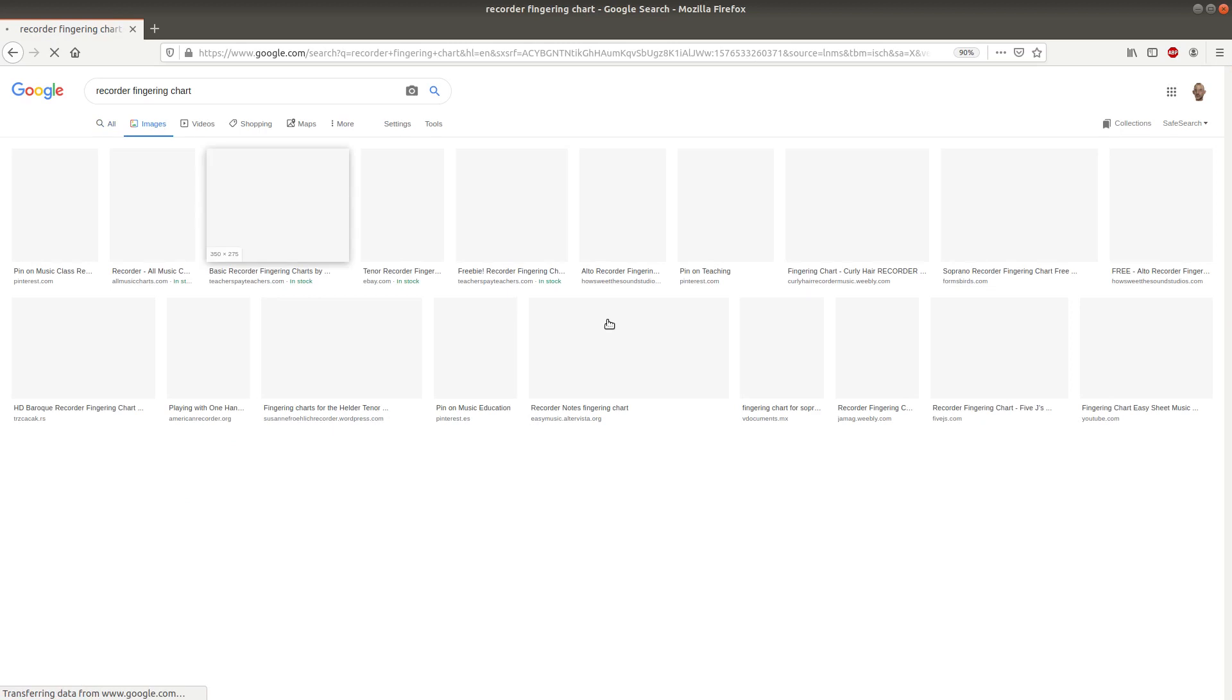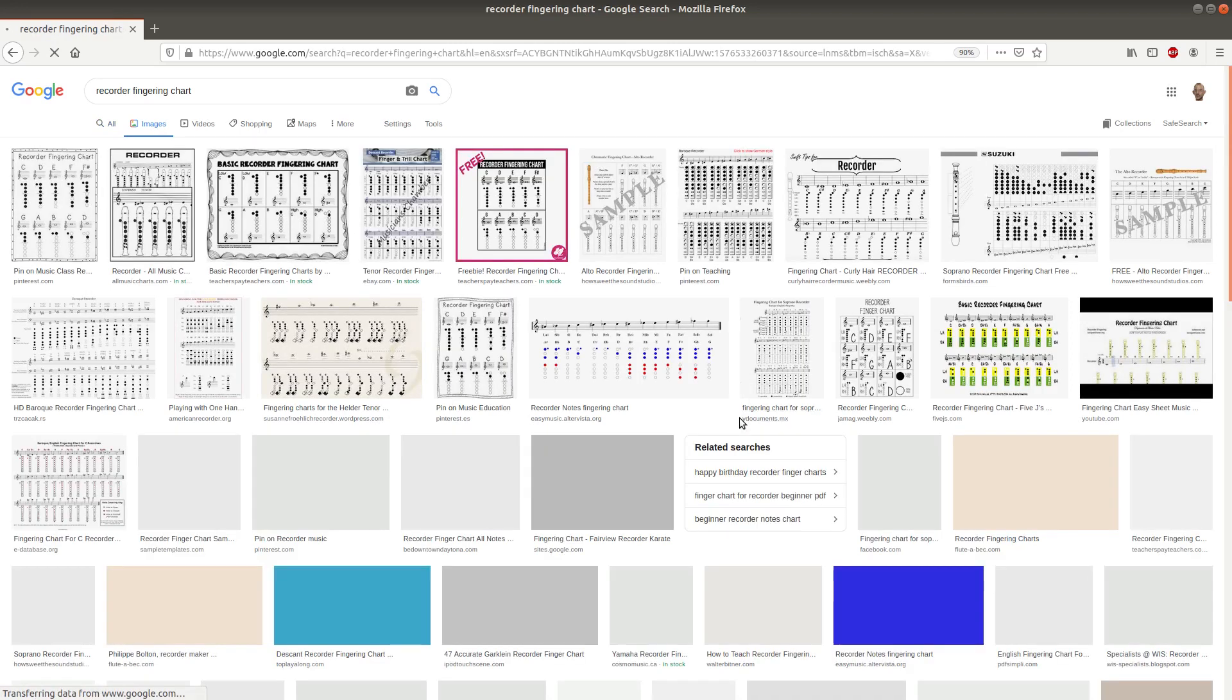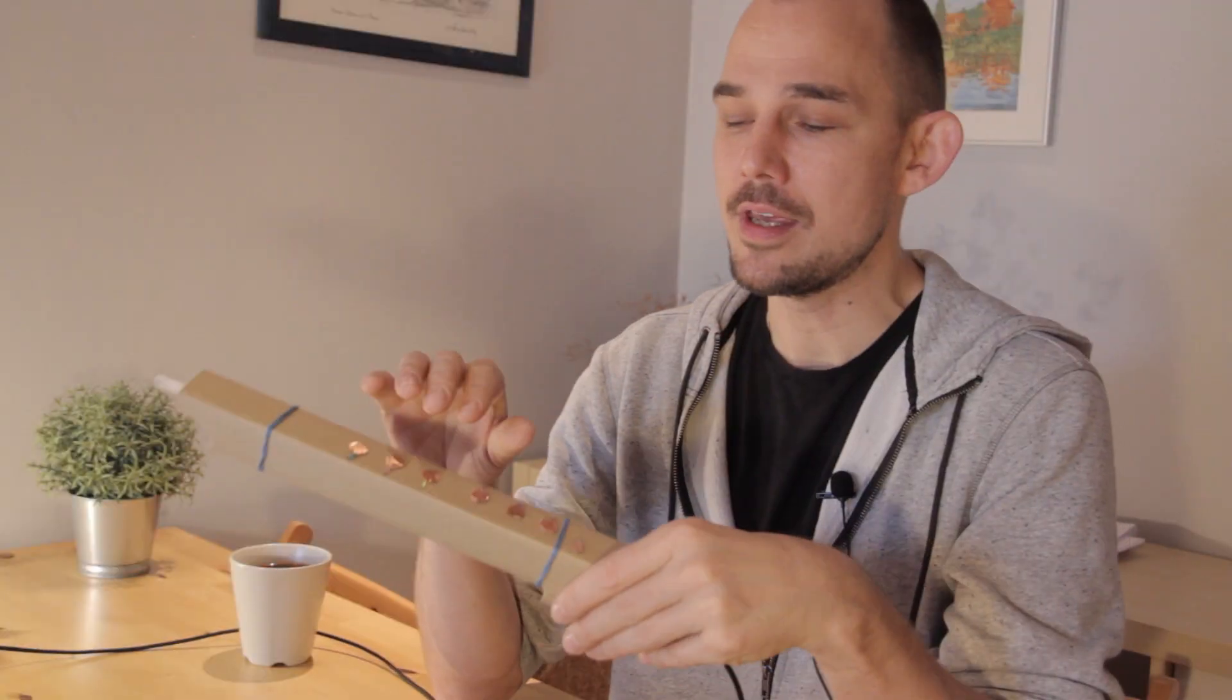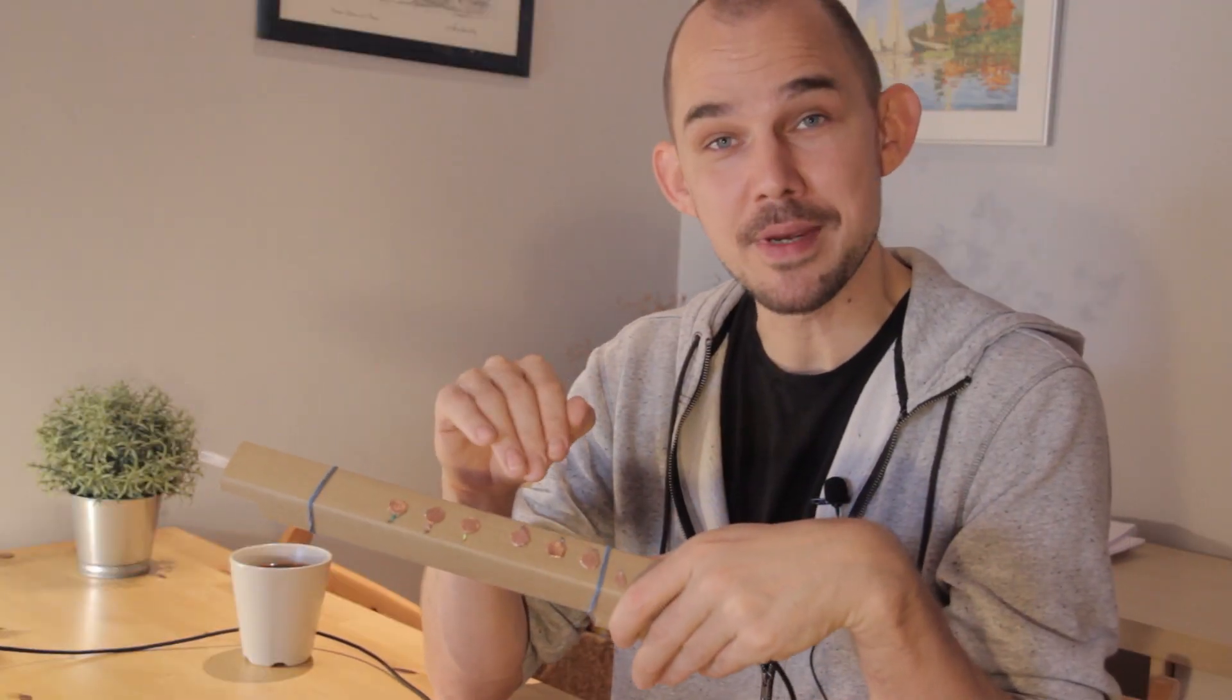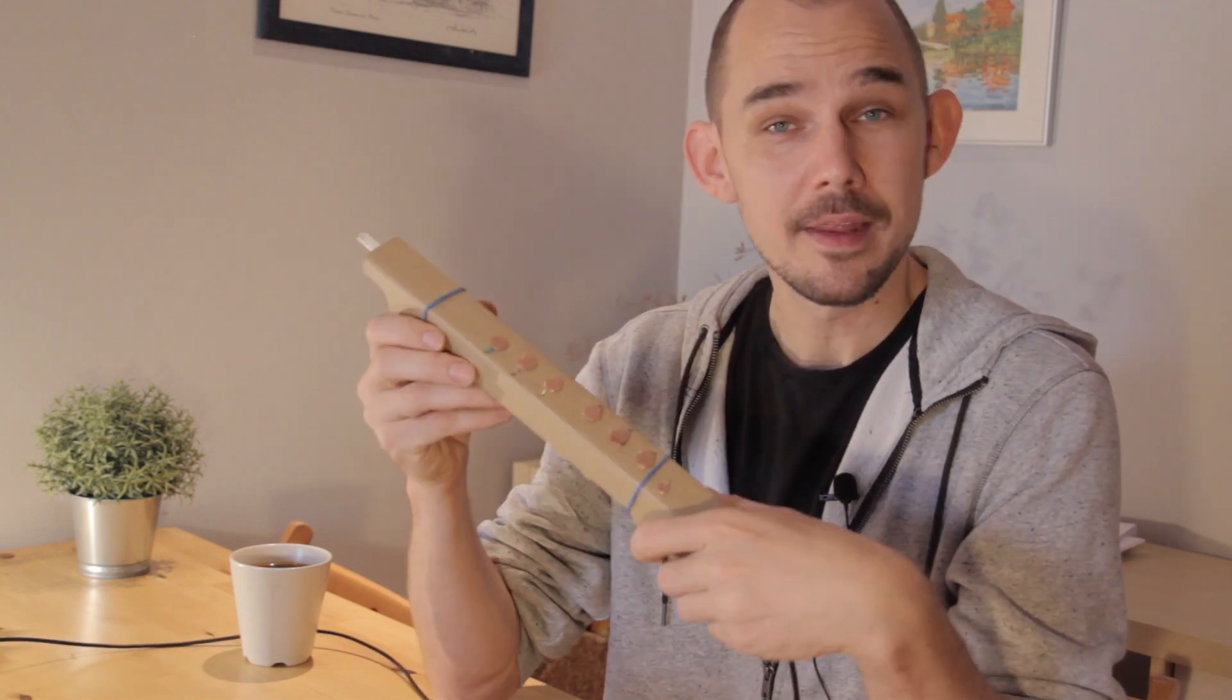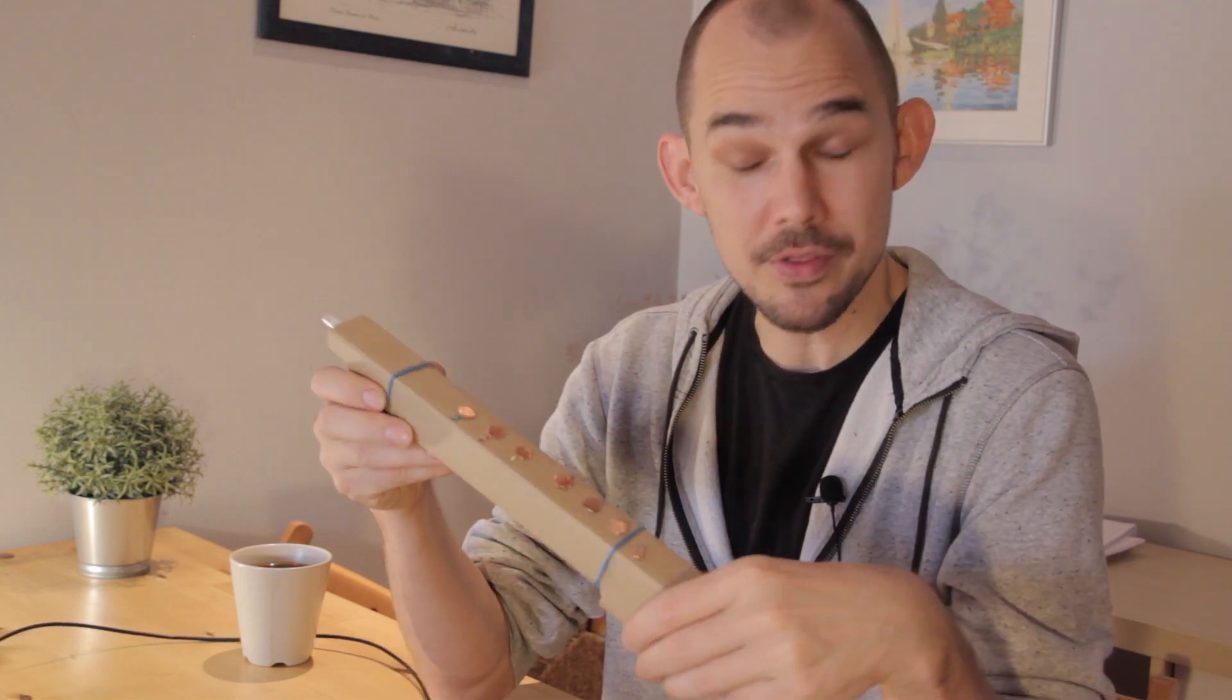The fingerings are based off of official recorder fingering charts, but I did take a few liberties, specifically so that I wouldn't have to read partially covered keys, which is a thing with recorders. Now, the capacitive keys here would be able to measure partial covering easily, but it would make the code a little bit more complex. Still, I might implement that some other time.